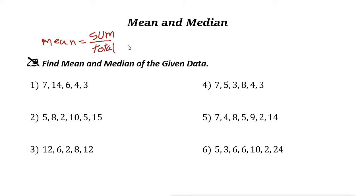For the median, the median is the value in the middle of a set of numbers which are arranged in order from biggest to smallest or smallest to biggest. Let's take a look at an example where we want to find both the mean and median.